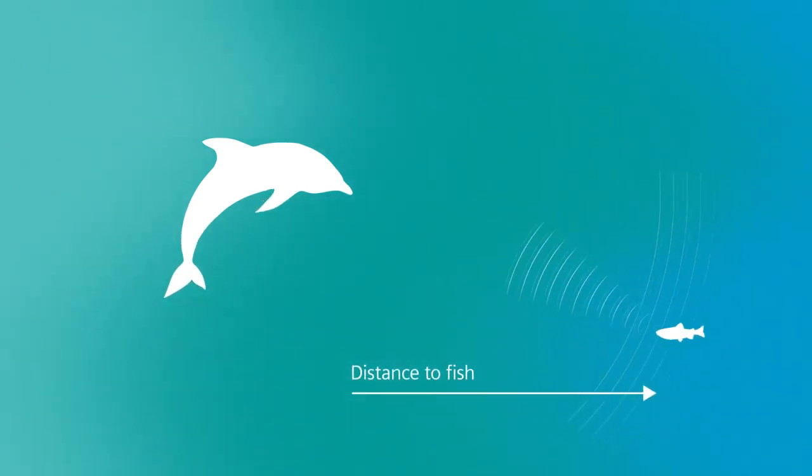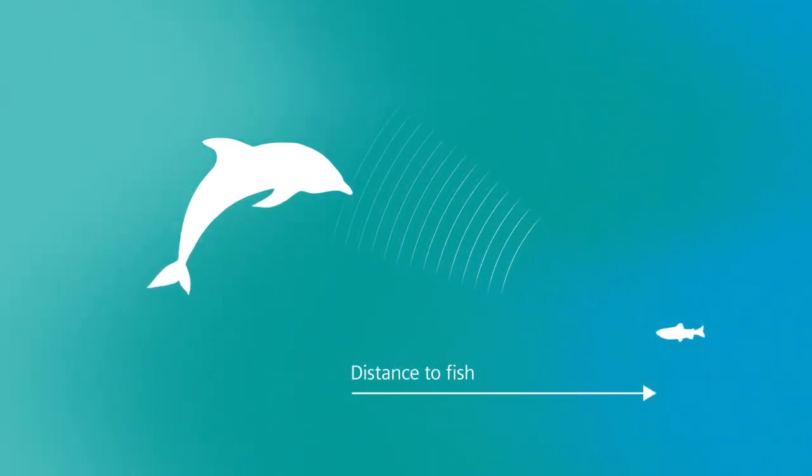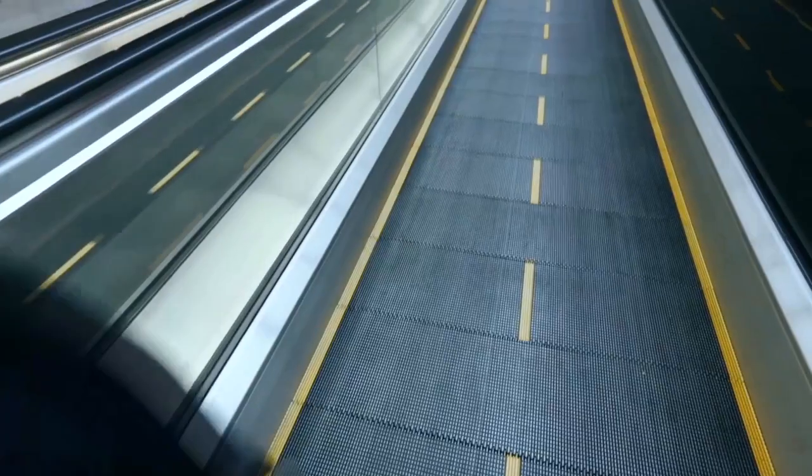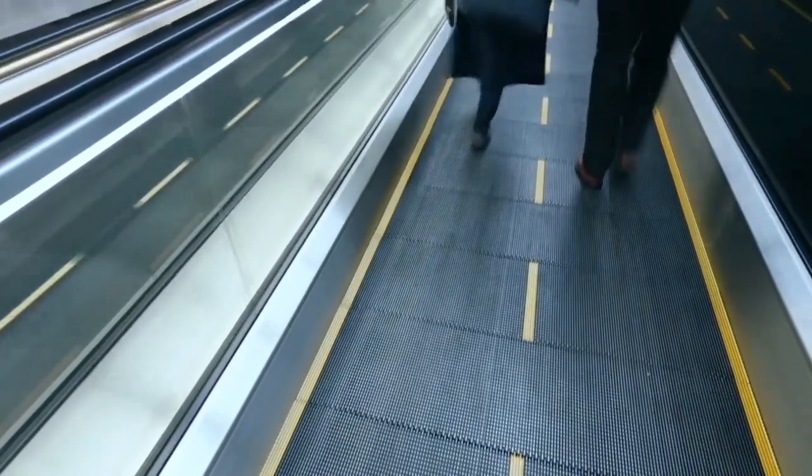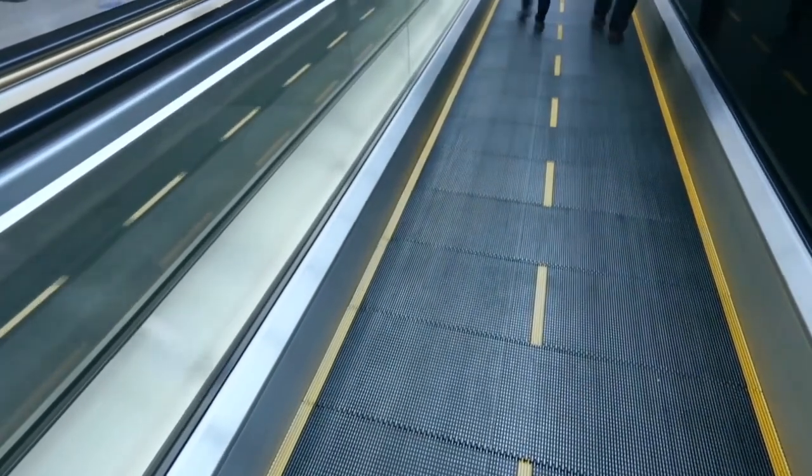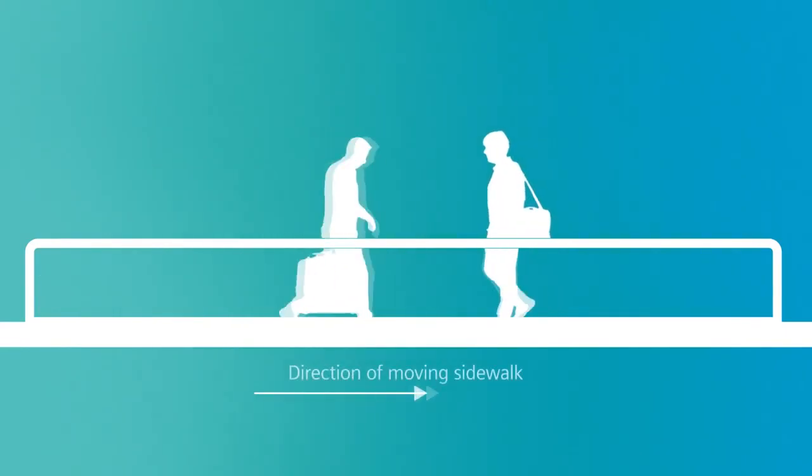Some animals use ultrasound with more than 20,000 Hertz, not audible to the human ear, to estimate distances extremely well. Think about an object moving in the same direction as a moving sidewalk. It advances at a faster pace than an object traveling in the opposite direction.